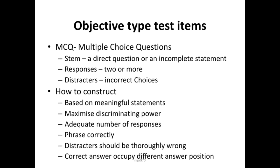Now we look in detail at objective test items. The first one is MCQ, that is multiple choice questions. Multiple choice questions have a stem — a direct question or incomplete statement — followed by responses, generally four or five options. An important aspect is distractors, which are incorrect answers. Distractors should be carefully included in the options alongside the correct answer.